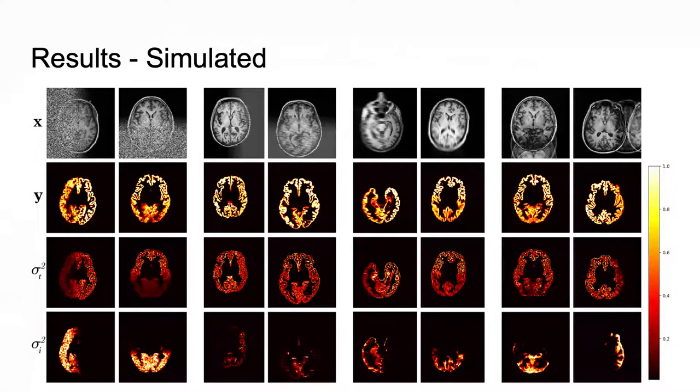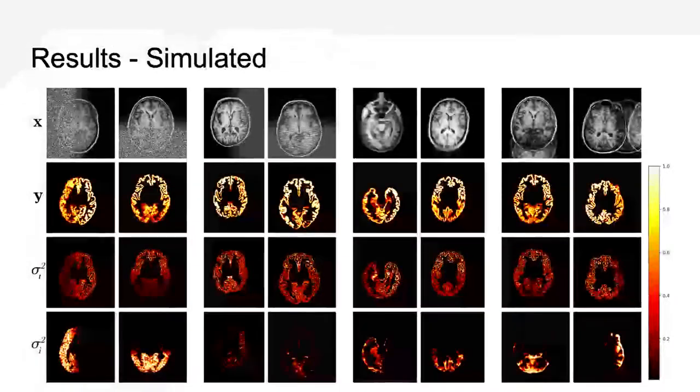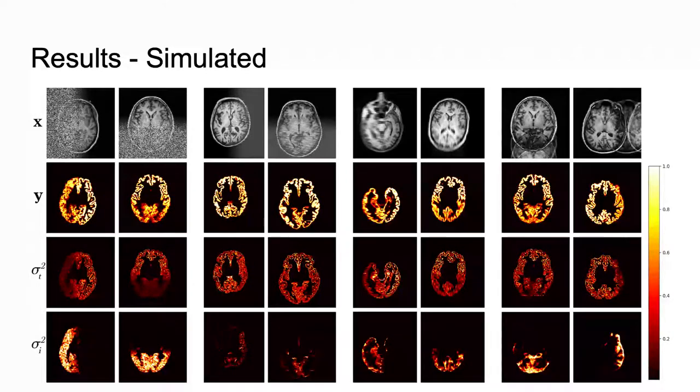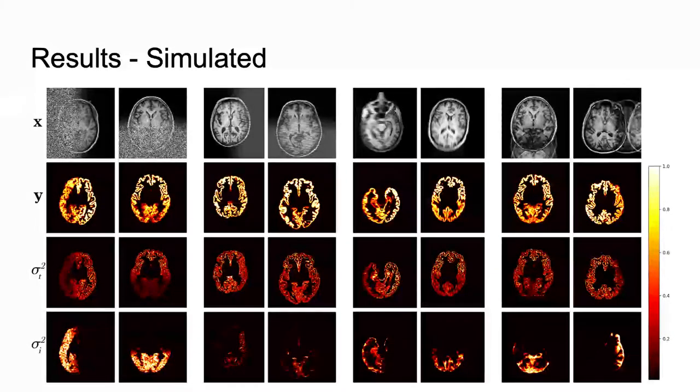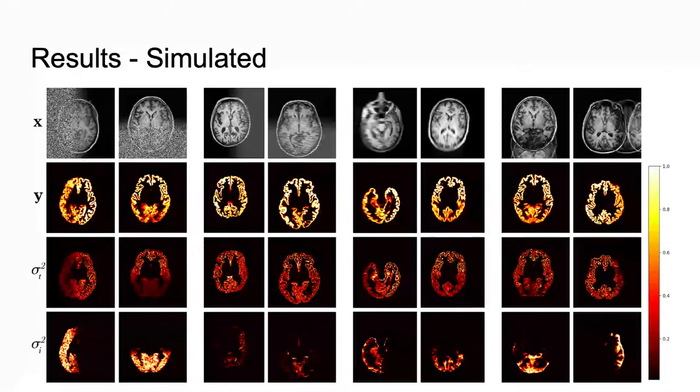Looking at the augmentation uncertainty, we see that areas of high uncertainty are generally found in the artifacted regions. Note that in the case of very heavy noise, the task uncertainty decreases as the signal is impaired, and therefore the model reverts back to its prior distribution.